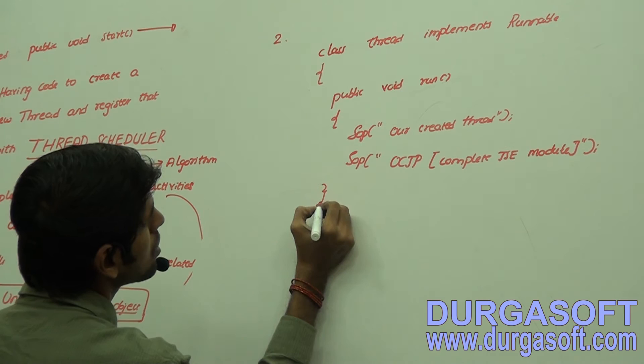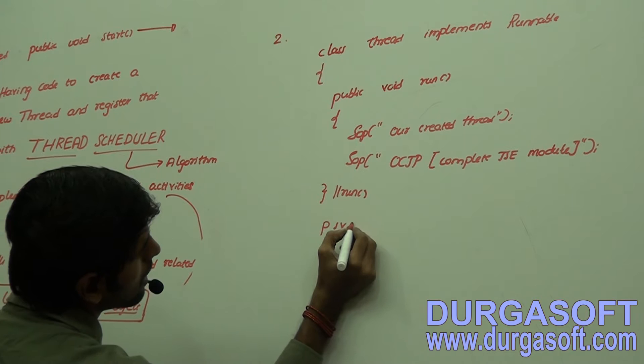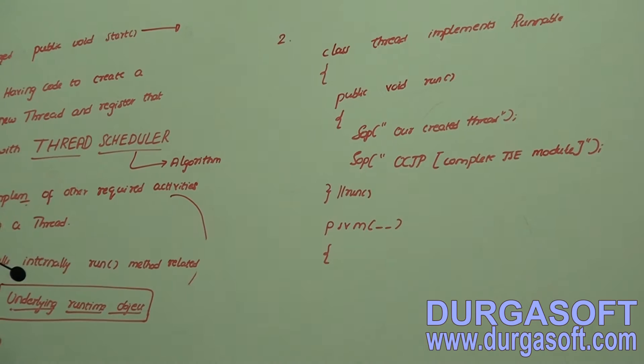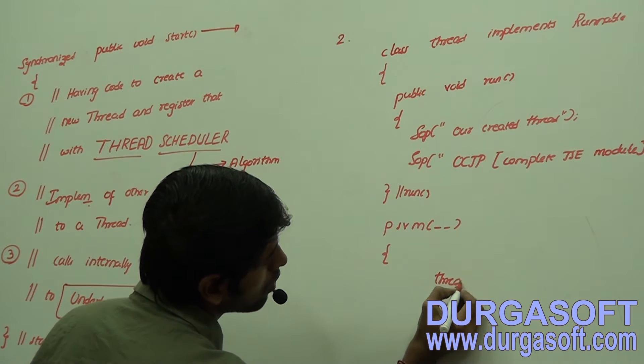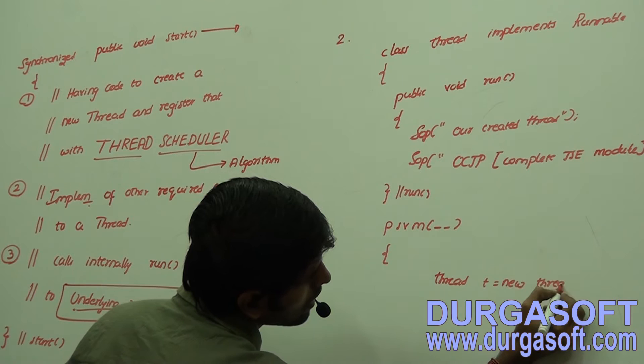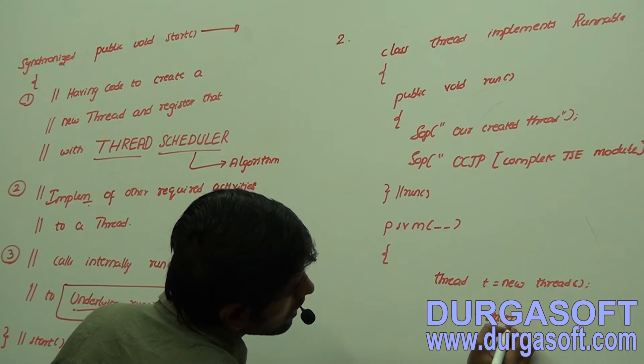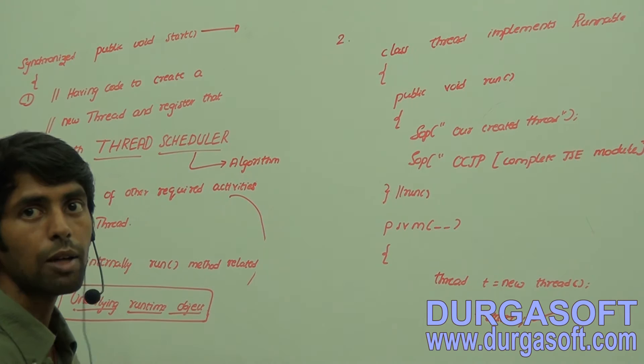Let me close the run method and take one static main method in order to execute our code. Now, don't fall into the pit - you might think you can call t.start() directly. We discussed t.start() - is it correct? It is actually false, and it will give a compile error.